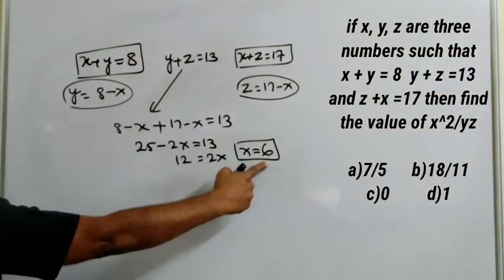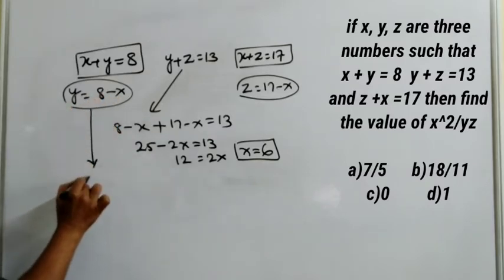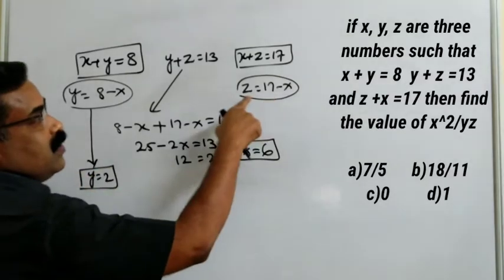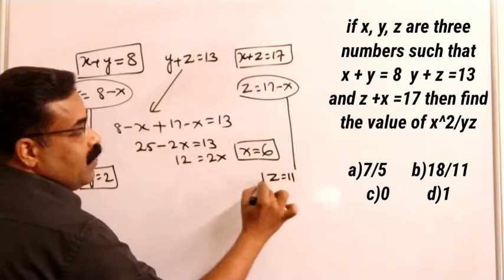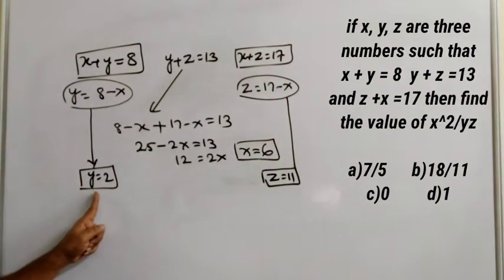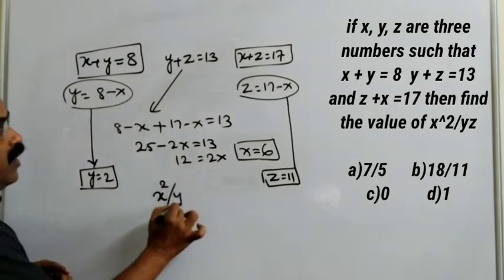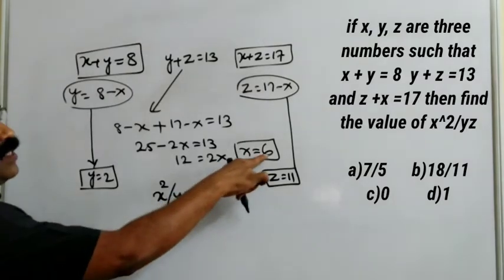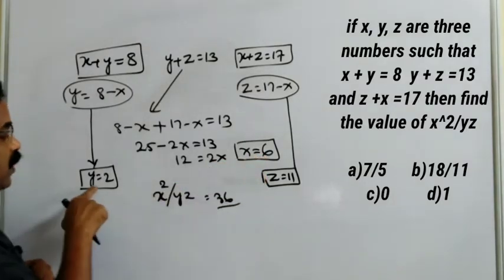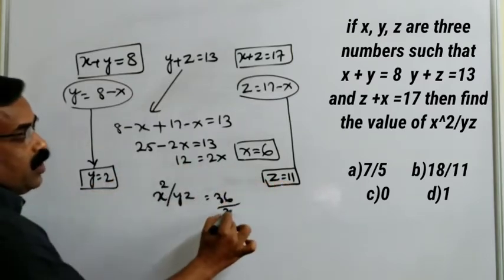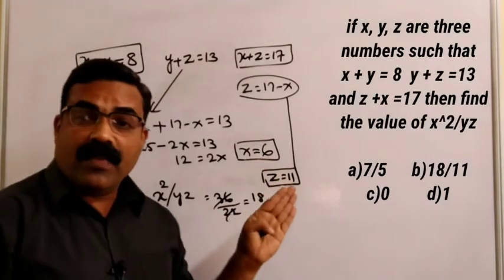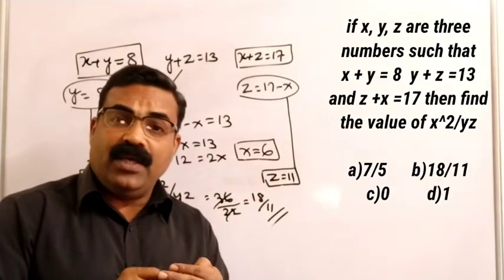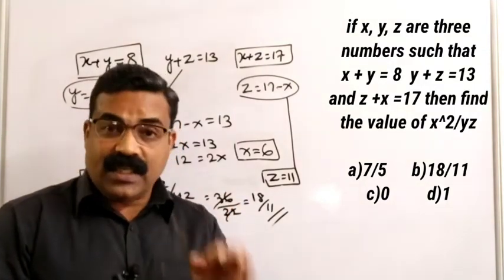With x = 6: y = 8 − 6 = 2, and z = 17 − 6 = 11. Now we find x²/yz: x² = 36, y × z = 2 × 11 = 22. So x²/yz = 36/22 = 18/11. The correct answer is 18/11. These types of algebraic questions are very common in the SSC CGLE exam.